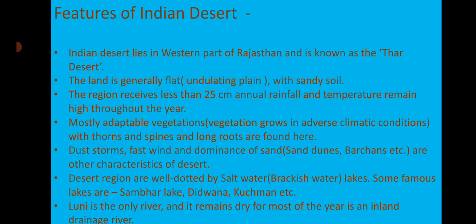Dust storms, fast winds, and dominance of sand — that means sand dunes, barchans, etc. — are other characteristics of the desert. Desert regions are well dotted by saltwater lakes, also known as brackish water lakes.